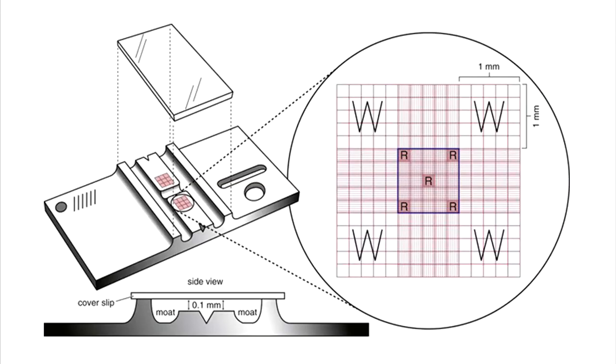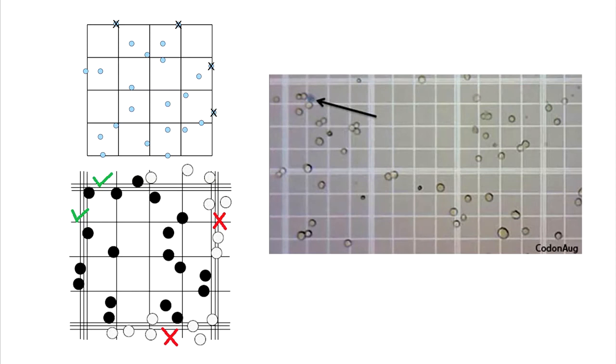When you look through the microscope, you will see the chamber with four corner squares to count. To count precisely, it is important to understand the rules of limit lines or boundary rules. The triple lines outline the size of each square.